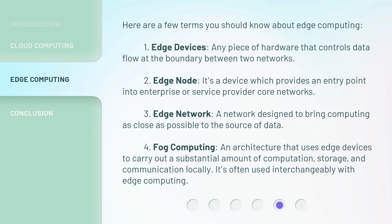Here are a few terms you should know about edge computing. 1. Edge devices: any piece of hardware that controls data flow at the boundary between two networks. 2. Edge node: a device which provides an entry point into enterprise or service provider core networks. 3. Edge network: a network designed to bring computing as close as possible to the source of data. 4. Fog computing: an architecture that uses edge devices to carry out a substantial amount of computation, storage, and communication locally. It's often used interchangeably with edge computing.